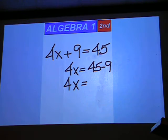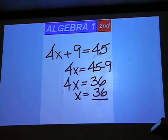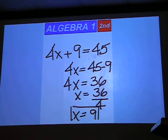45 minus 9 is 36. You will divide the 36 by the coefficient of the x, which is simply the number beside it, which is 4. And 36 divided by 4 is an answer of positive 9.